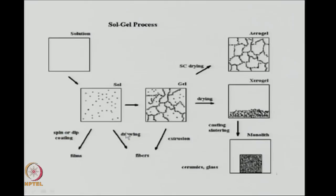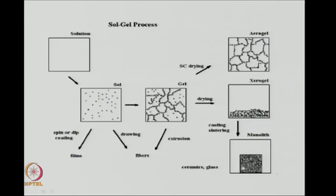You can make fibers not only by drawing from the sol but also by extruding from the gel. So various end products are possible. Depending on the application, you have to treat the gel in the appropriate manner to yield either the aerogel, the xerogel, the monolithic structure, fibers, or films.